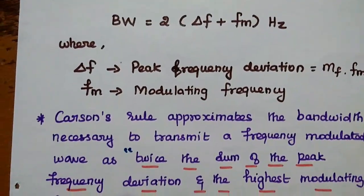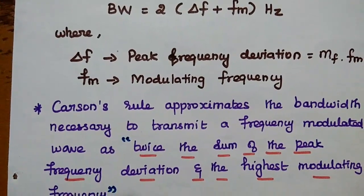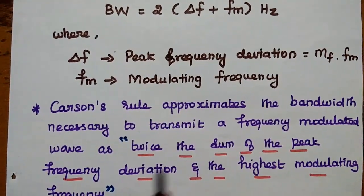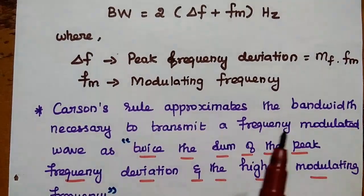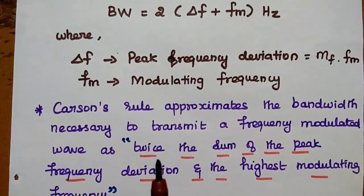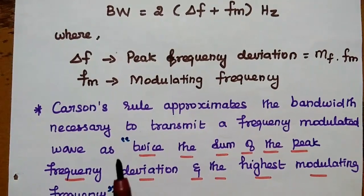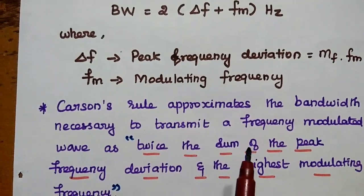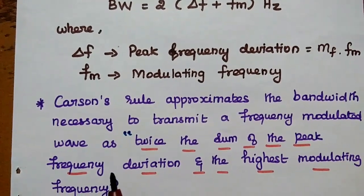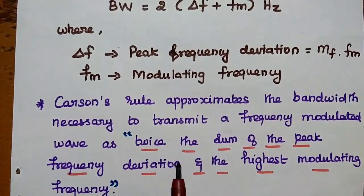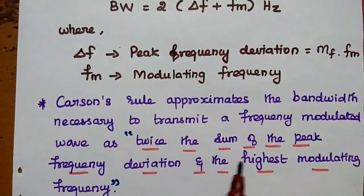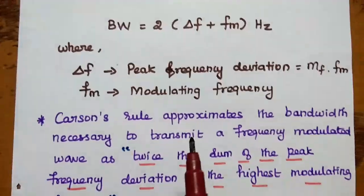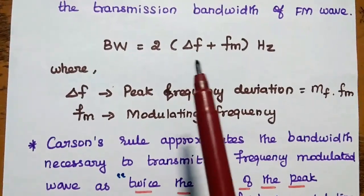So, Carson's Rule approximates the bandwidth necessary to transmit a frequency modulated wave as twice the sum of the peak frequency deviation and the highest modulating frequency. This is the statement for Carson's Rule.